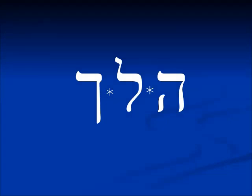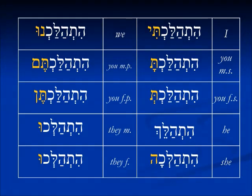We're going to pick up a hitpa'el form with the verb halach. Hitpa'el perfect forms will have the he-tav at the beginning and then the normal endings: hithalchti, hithalchta, hithalcht, hithalech — remember that the vowels in the name of the binyan hitpa'el we will see in the third person masculine singular perfect: hithalech. Then hithalchah for the feminine, hithalchnu, hithalachtem, hithalachten, hithalchu, hithalchu.